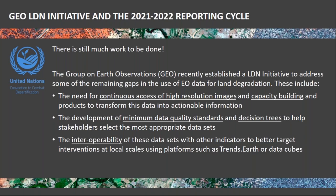There is still quite a bit of work to do. In 2017, parties invited the Group on Earth Observations, GEO, to assist with the use of these big datasets. Now there is a GEO LDN initiative focused on three major work streams: capacity building including access to continuous high-resolution data; developing minimum data quality standards for selecting the most appropriate datasets; and mapping land degradation data with other indicators to target interventions where they are needed most. The UNCCD is preparing for its next reporting cycle in 2021-2022, continuing to work with Conservation International, space agencies, and other partners to improve access to big data and make it actionable on the ground.